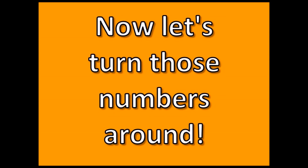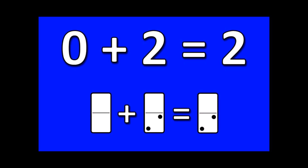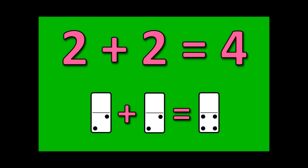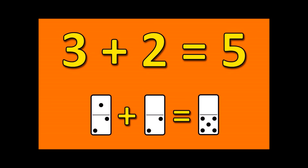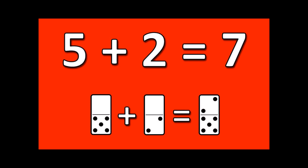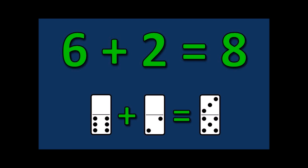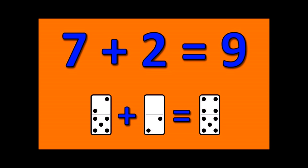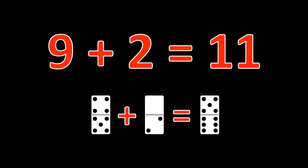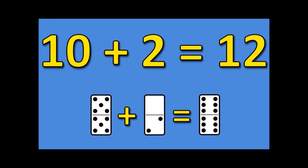Now let's turn those numbers around. Zero plus two is two. One plus two is three. Two plus two is four. Three plus two is five. Four plus two is six. Five plus two is seven. Six plus two is eight. Seven plus two is nine. Eight plus two is ten. Nine plus two is eleven. Ten plus two is twelve.